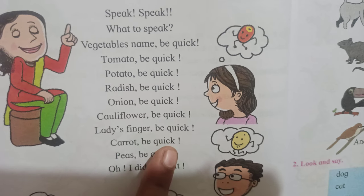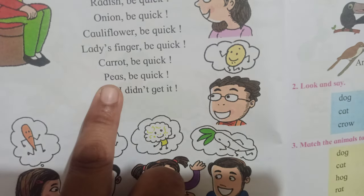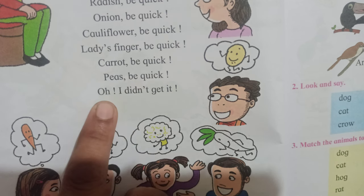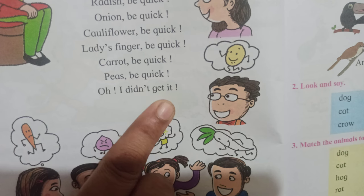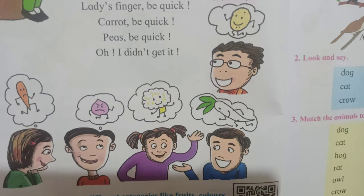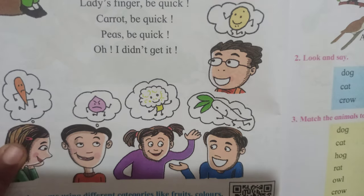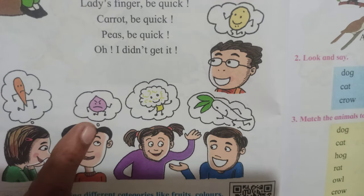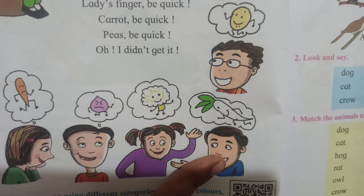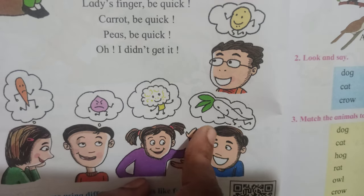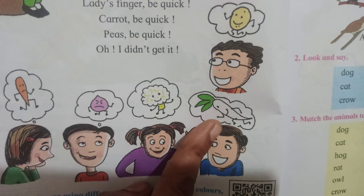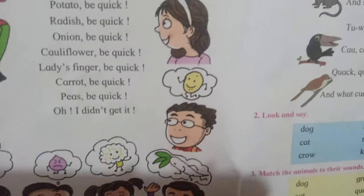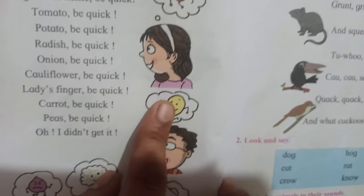Carrot. Here are a few students. This one girl got a carrot. This one boy got an onion. This one girl got a cauliflower. This one boy saying radish. This one boy saying potato. And this one girl saying tomato.